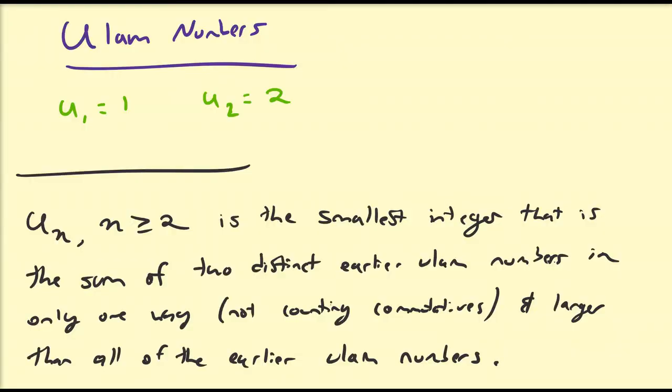So I have here written down how the other Ulam numbers are defined. So let's sort of work through this definition. So Un for n greater than 2 is going to be the smallest integer that is the sum of two distinct earlier Ulam numbers.